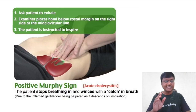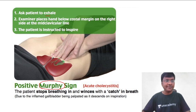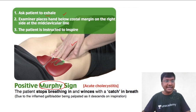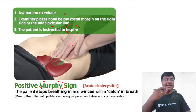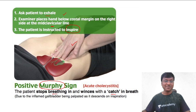In acute cholecystitis, a very important sign that you should know is Murphy's sign, and you should also know how to elicit it. First, ask the patient to exhale. Then the examiner places his hand below the costal margin on the right side at the mid-clavicular level. The patient is then instructed to inhale or inspire. Once the individual is doing inhalation, the patient stops breathing in and winces with a catch in the breath — that is what is called Murphy's sign, which is seen in patients with acute cholecystitis.